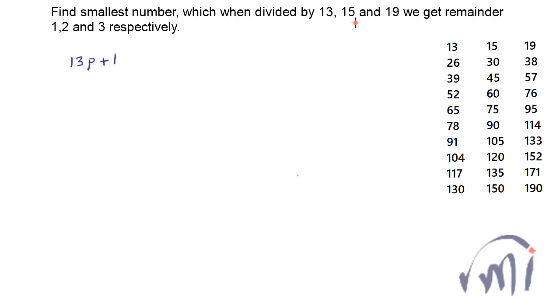And the number which when divided by 15 and gives remainder 2 will be of the form of 15q plus 2 and both these numbers are same. So from here we can say p will be equal to 15q plus 1 divided by 13.